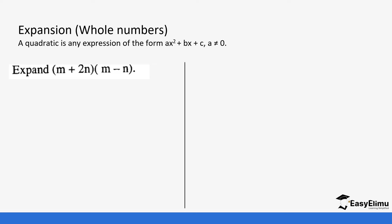A quadratic expression is in the form of ax squared plus bx plus c. Remember, a is not equal to zero.